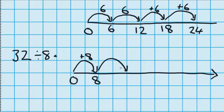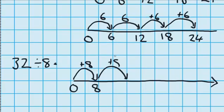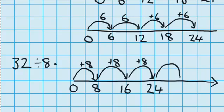And then I'm going to draw another jump of 8, which will take me to 16. And then I'm going to jump again, another 8, which will take me to 24. And another jump of 8, which will take me to 32. So I've done 1 jump, 2 jumps, 3 jumps, 4 jumps. So the answer is 4 again.